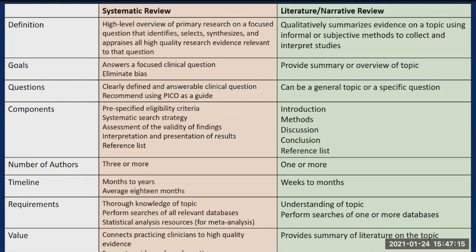One of the major differences between a systematic review and a traditional literature review is that the systematic review is guided by a protocol. The protocol serves as a blueprint to clearly and succinctly describe how the review is done, why it's important, what methods are used, and how the findings will be used. I also want to point out the number of authors and timeline. In a systematic review, it's typically three or more people, while a literature or narrative review is typically one or more. Systematic reviews take months to years — the average is about 18 months — whereas literature reviews can be done in weeks to months.